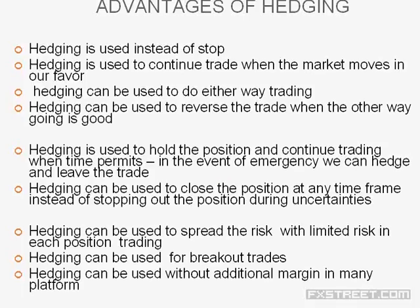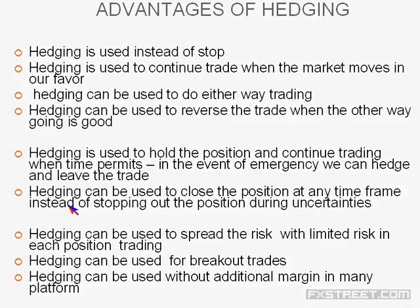Hedging can be used to close a position at any time frame — the only cost is overnight interest. Hedging can also be used to spread risk: without hedging, keep buy or sell orders 150 pips apart. With hedging, when the market moves downward for a month, all hedging positions may make profit; close them and keep new hedging orders at the bottom. When the last hedging order isn't consistently profitable for two sessions, close it with a loss, keep the rest with profit, and keep a collective hedging order.